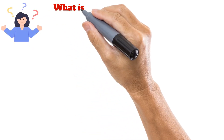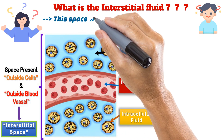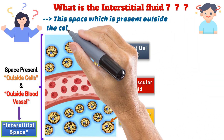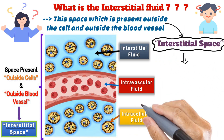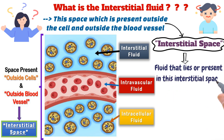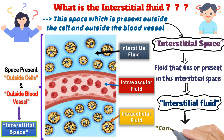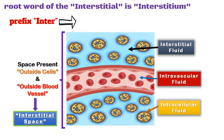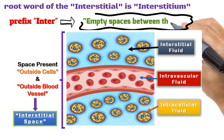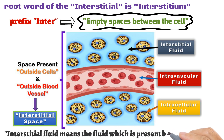You would really be curious to know what the interstitial fluid is. Just look at the diagram — this space which is present outside the cell and outside the blood vessel is termed as interstitial space. The fluid present in this interstitial space is termed as interstitial fluid, which contributes roughly around 16%. The root word of interstitial is interstitium, and the prefix inter- denotes empty spaces between the cells. Hence, interstitial fluid means the fluid which is present between two cells.